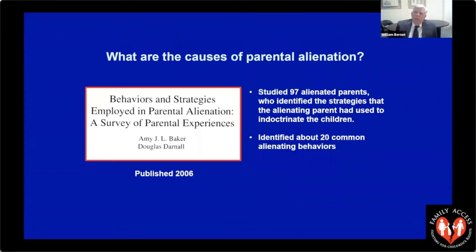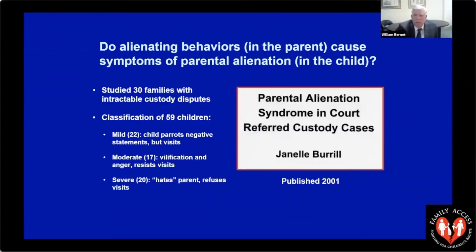Baker and Darnell also studied alienating behaviors — the other half of what happens. They interviewed parents who described all the strategies the other parent used to indoctrinate the children. After collecting hundreds of strategies, they grouped them into 20 common behaviors, later reduced to 17. These are called the 17 common alienating behaviors — another example of quantitative research.